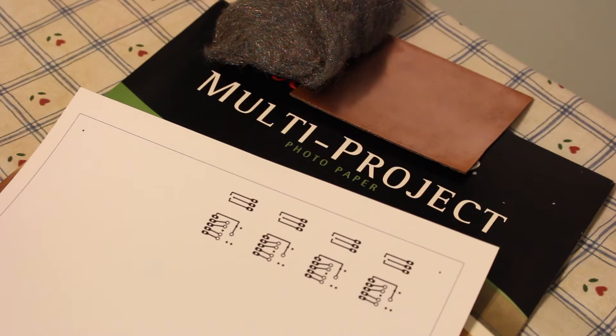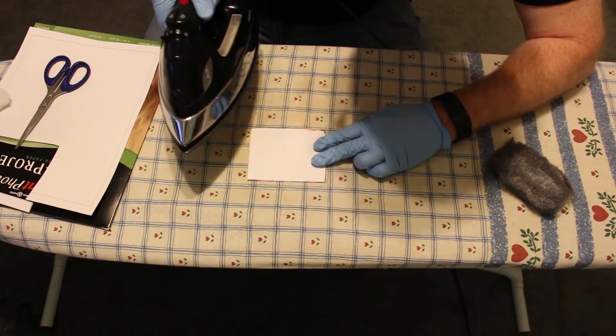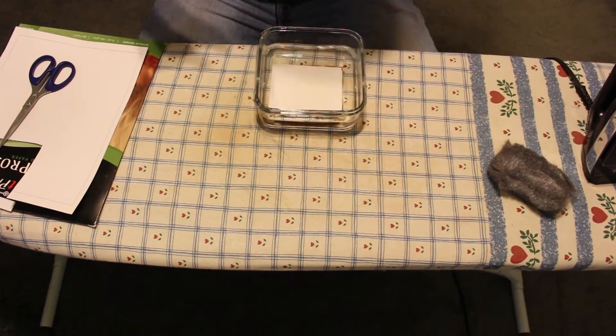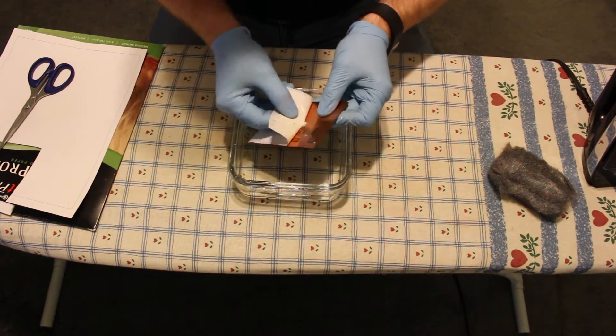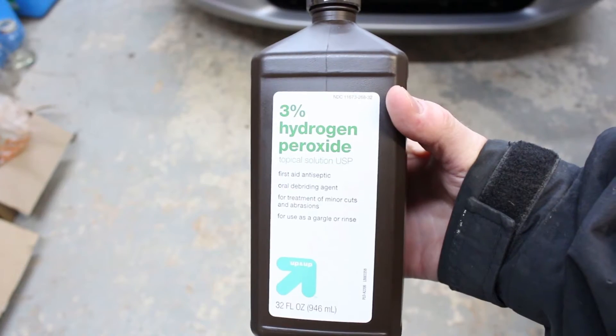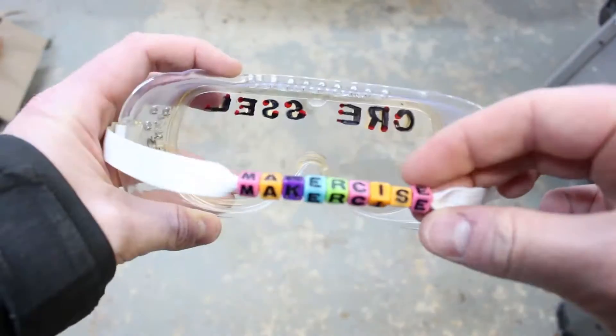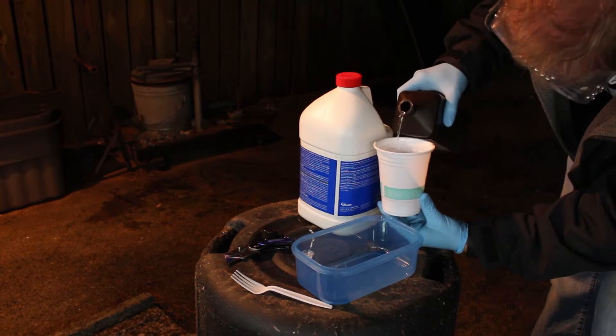I print the circuit onto photo paper using a laser printer, then I transfer the toner to the circuit board using heat. I soak the board in water, peel off the photo paper, and then I can use hydrogen peroxide, muriatic acid which contains hydrochloric acid, and some appropriately blinged out PPE courtesy of my sister.